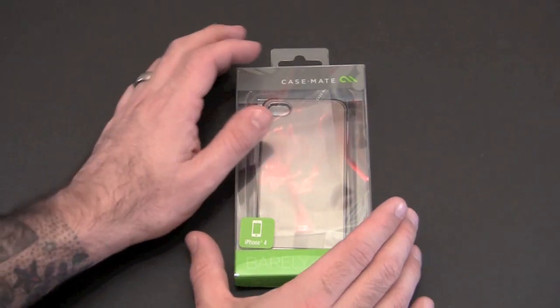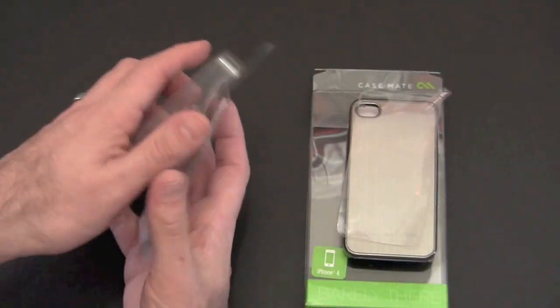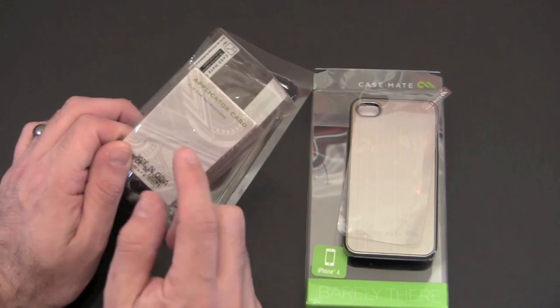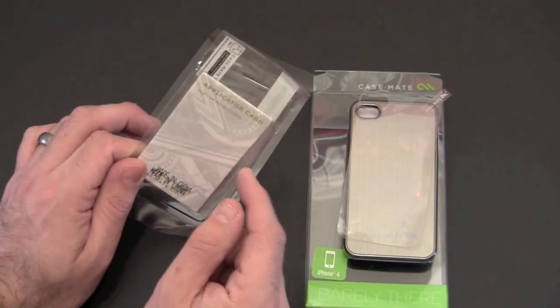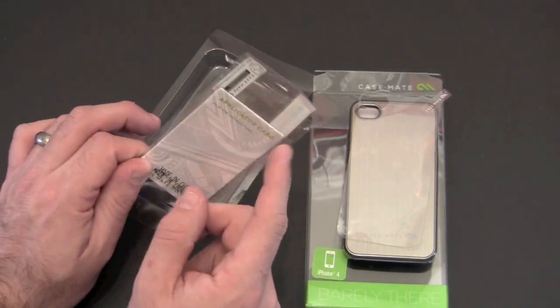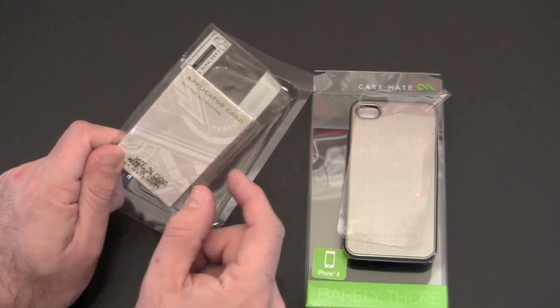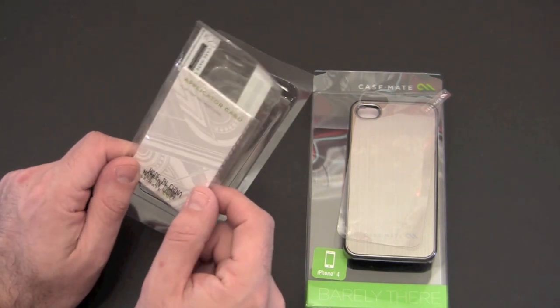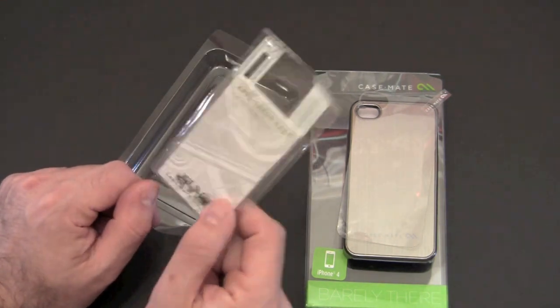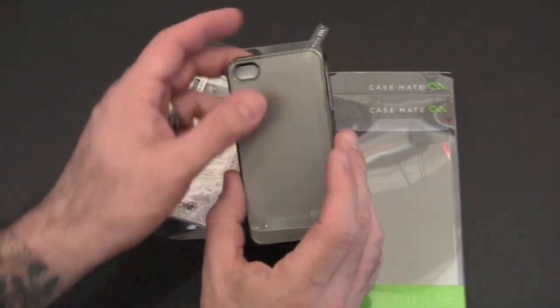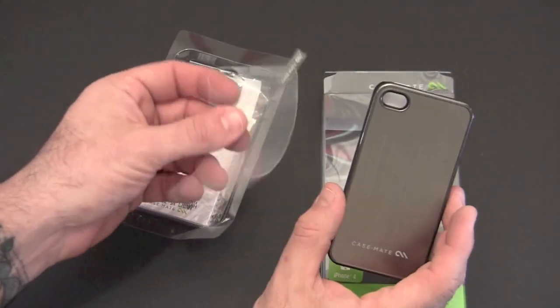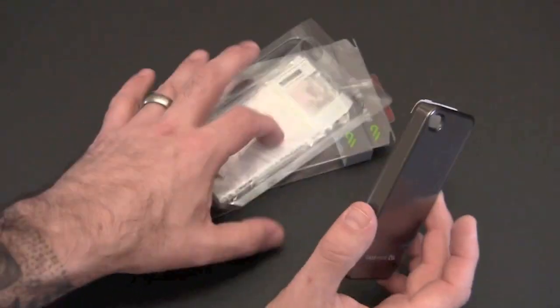So let's take a look at what's included with the case. Inside the box you're going to get one of Casemate's screen protection kits. This includes a crystal clear screen shield, an applicator card, and a microfiber cleaning cloth. Casemate gives you one of these in every case they sell. Then the case itself. It has a little back protection piece just to make sure it doesn't get scratched in shipping.